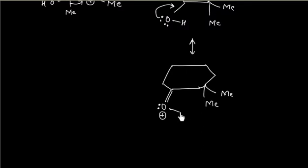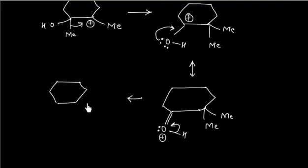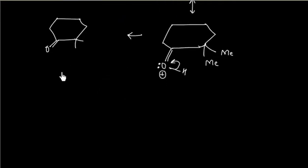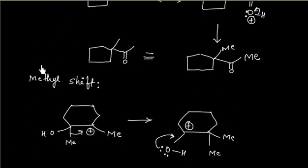Oxygen will have a formal positive charge. In the next step, if we lose H⁺, we will get the desired product containing 2 methyl groups and a C=O group. This product can equivalently be written as: 2 methyl groups with adjacent carbon having a ketone group — the same product where 2 methyl groups are adjacent to C double bond O.